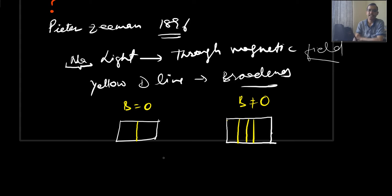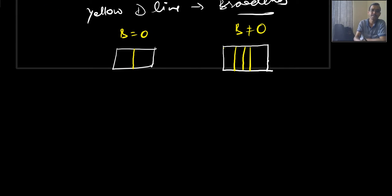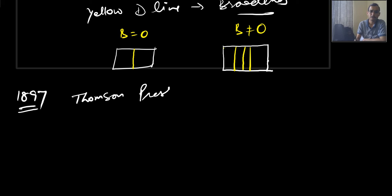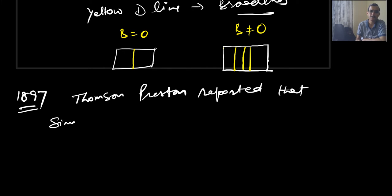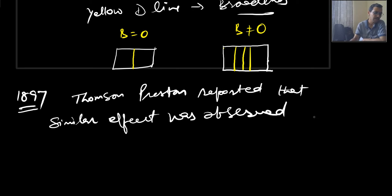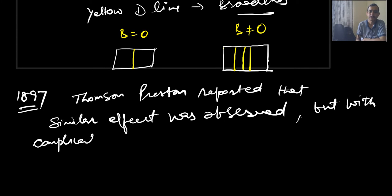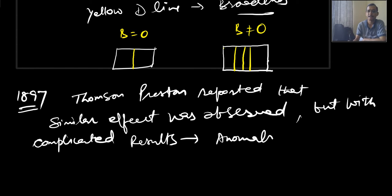Later in 1897, Thomas Preston reported that a similar effect was observed but with more complicated results — this line does not split into three lines but into more than three lines. This is known as the anomalous Zeeman effect.